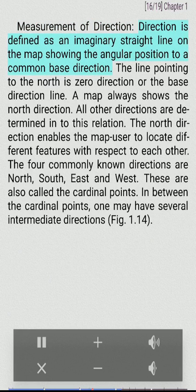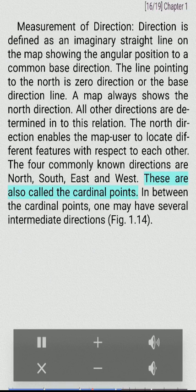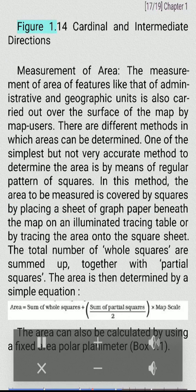Measurement of direction. Direction is defined as an imaginary straight line on the map showing the angular position to a common base direction. The line pointing to the north is zero direction or the base direction line. A map always shows the north direction. All other directions are determined in relation to this. The north direction enables the map user to locate different features with respect to each other. The four commonly known directions are north, south, east and west, also called the cardinal points. In between the cardinal points, one may have several intermediate directions (Fig. 1.14 — cardinal and intermediate directions).